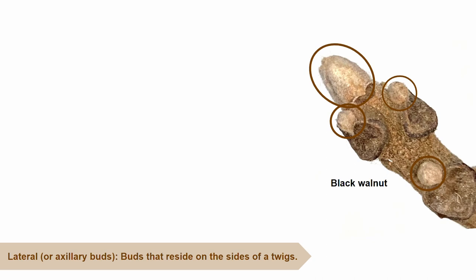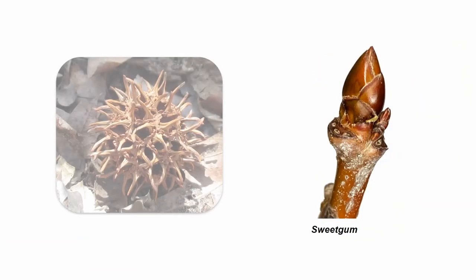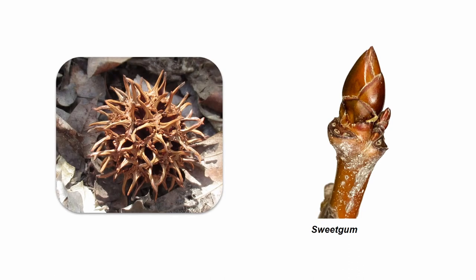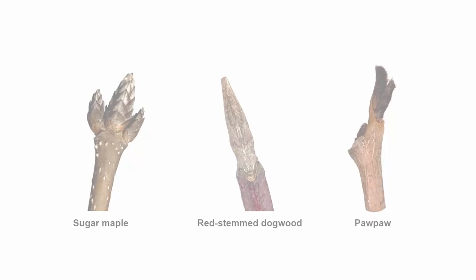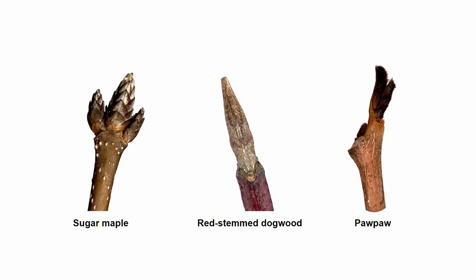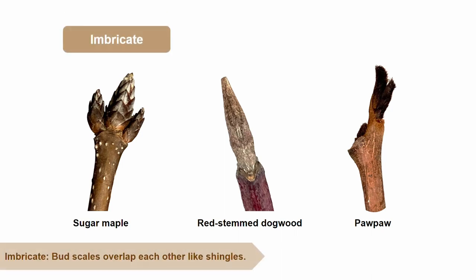Both lateral and apical buds may contain bud scales. In order to understand bud scales, we will be looking at the twig of a sweetgum tree. Sweetgum trees produce these infamous spike balls every year. Bud scales are modified leaves that surround a bud, and sweetgums have shiny brown bud scales with tiny hairs around the edges. Bud scales can be arranged in different patterns. The first and most common is named imbricate — this is when bud scales overlap each other like shingles on a roof. An example of imbricate bud scales would be a sugar maple.